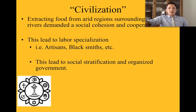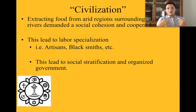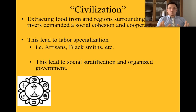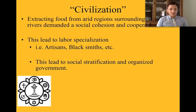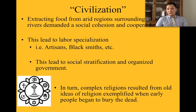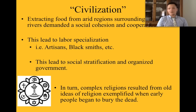Extracting food from arid regions surrounding rivers demanded a really big sense of social cooperation. A key component of a civilization is the idea that we're working together towards the goal of not dying. This led to labor specialization — such as artisans, blacksmiths. An artisan is just a skilled craftsman — a blacksmith, a carpenter, a farrier, a tanner, which is a person who makes leather. This led to social stratification and an organized government. The idea of economies led into government, and then oddly enough religion really kicked off after that — what came first, the chicken or the egg? Did religion influence government? Does it make us better people?